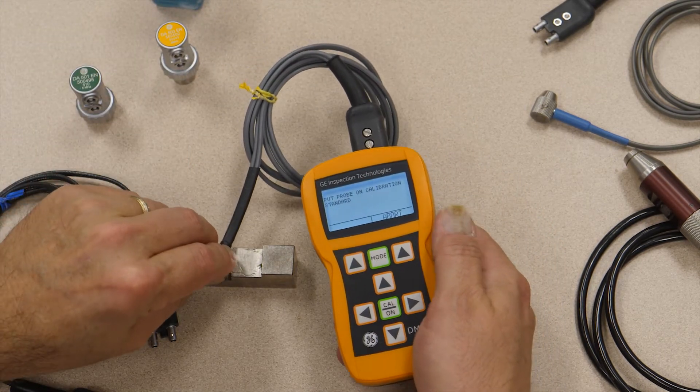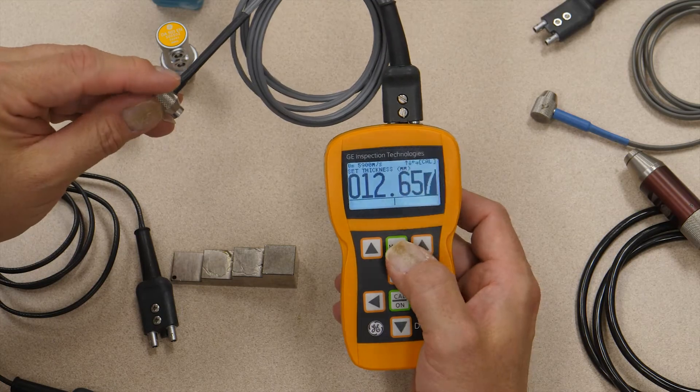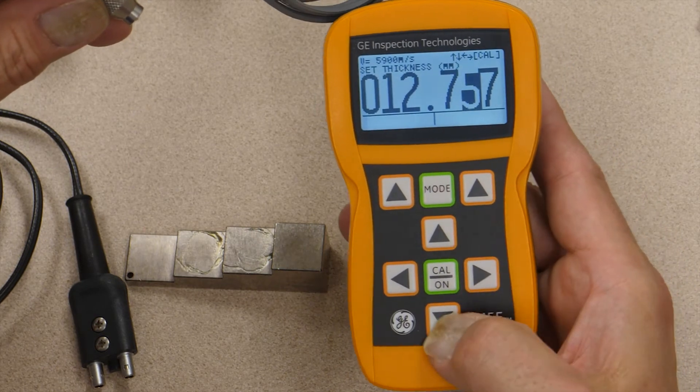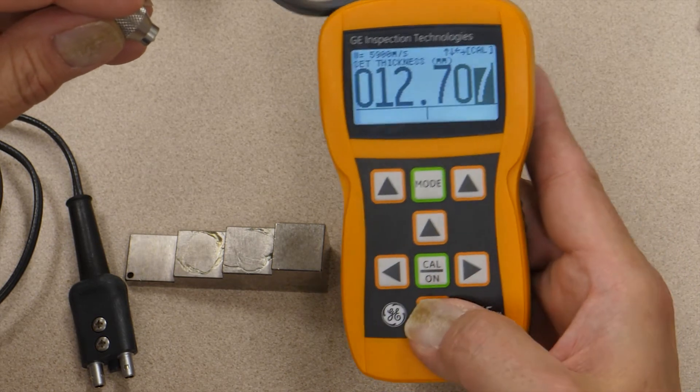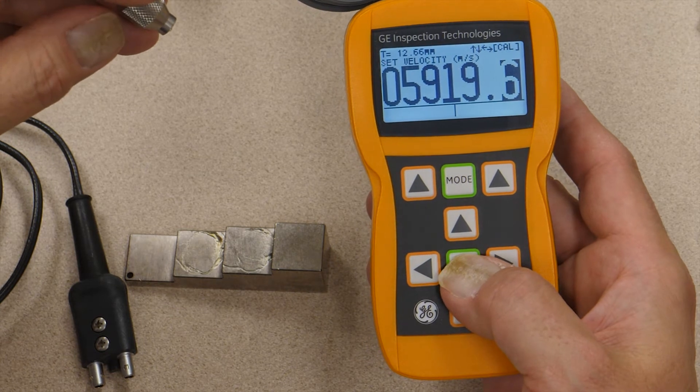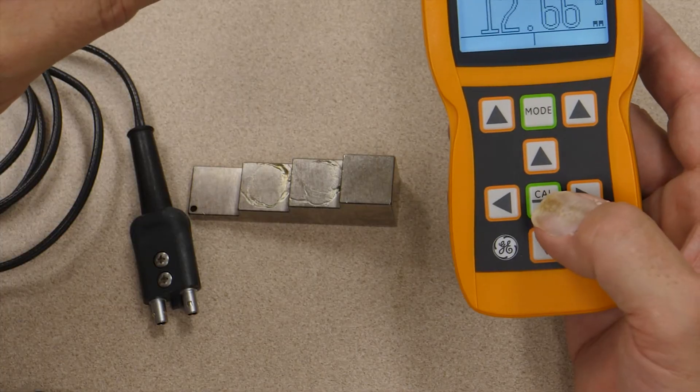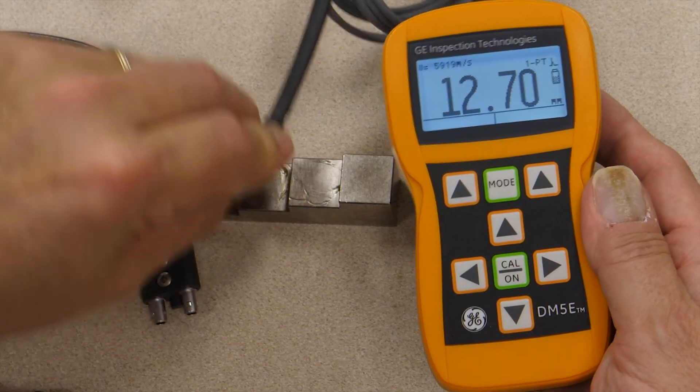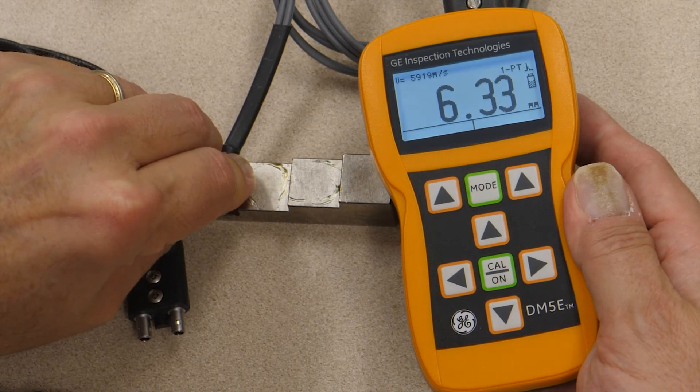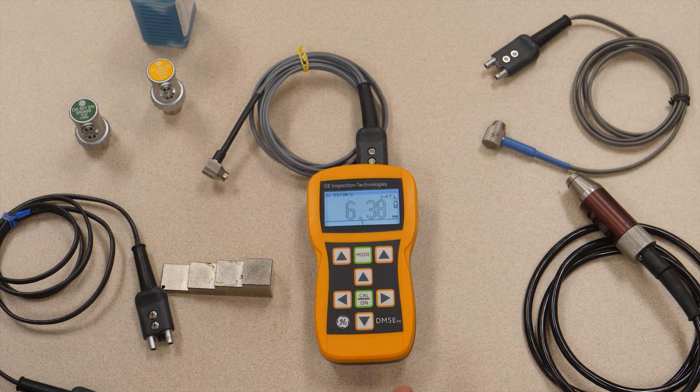Now it tells me to couple the probe to the cal block. Put it on my half inch step of my cal block. Remove it. So 12.65 millimeters. Let's say I know that's 12.700 millimeters. I can make my adjustments. And it tells me that gives a calculated velocity of 5919 meters per second, fully believable for carbon steel. So that's how you select the probe and step through a simple calibration.